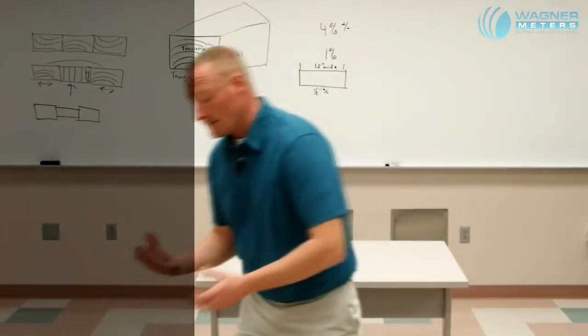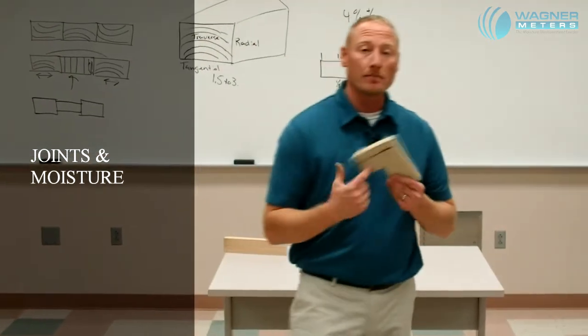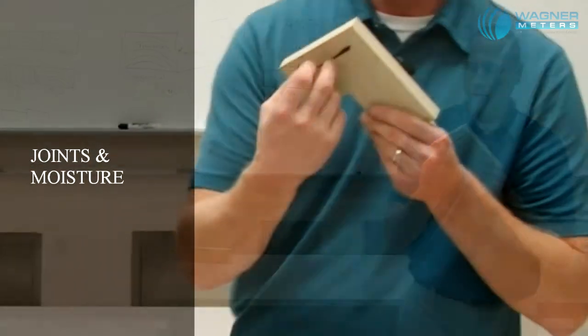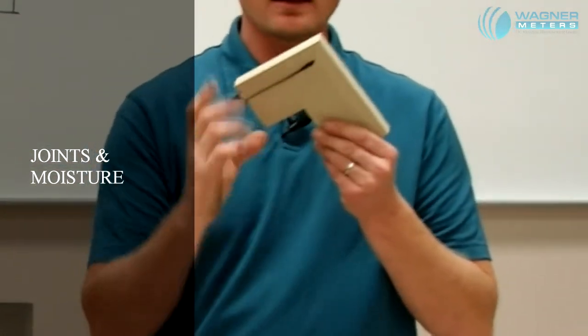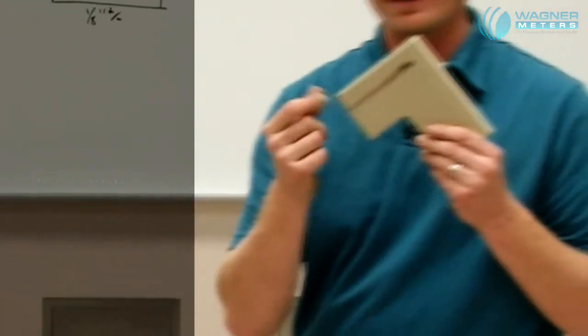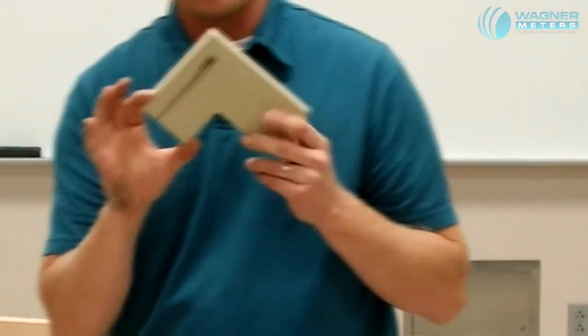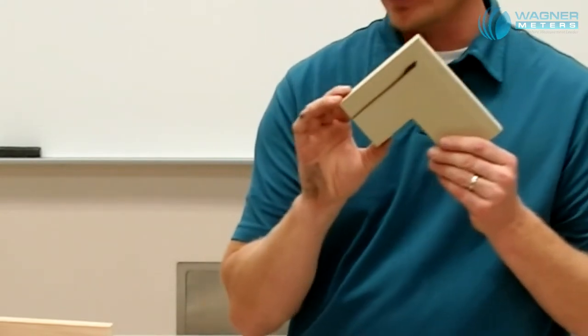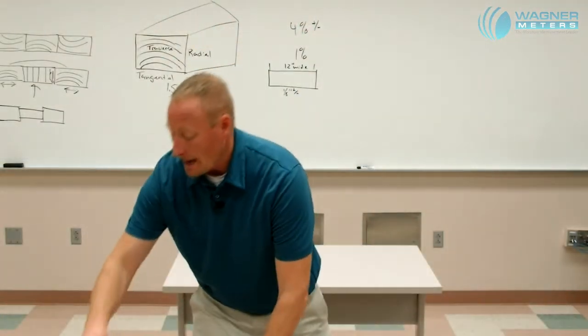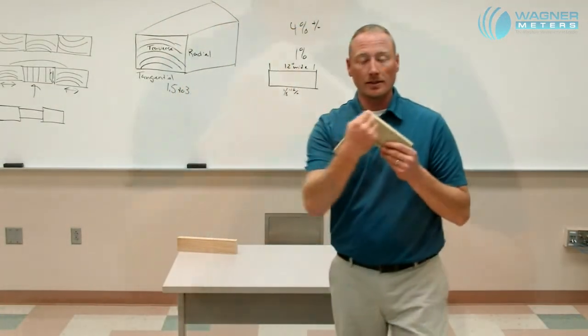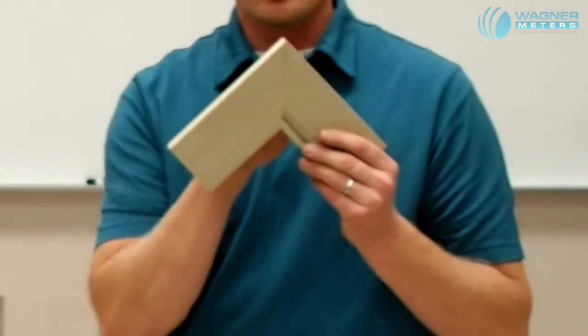Another thing that can actually happen is in joinery. Let's take, for instance, this miter joint. As we know, wood moves very minimally in the length, but significantly more in the width and thickness. So this miter joint, if this wood were to gain moisture, what will happen is the actual joint will separate towards the end of that board, causing a gap.